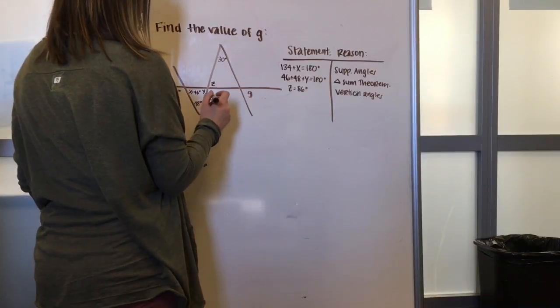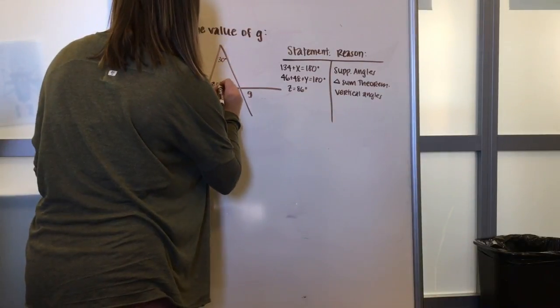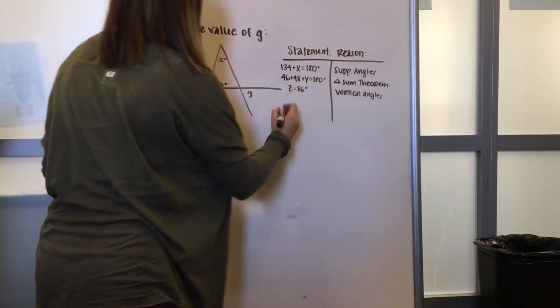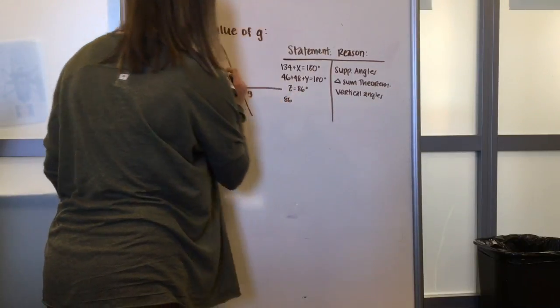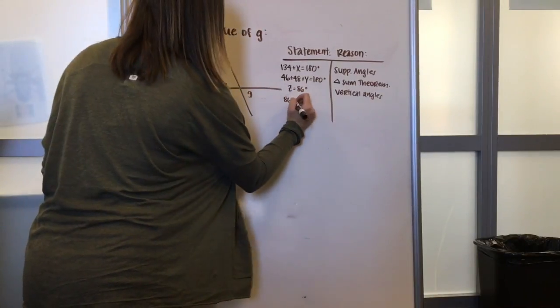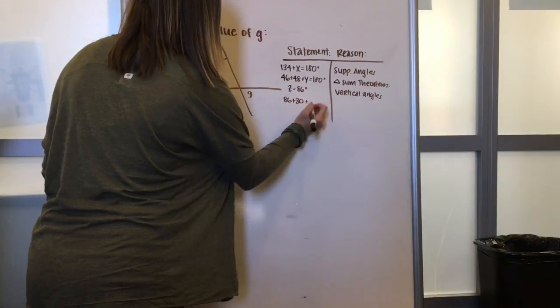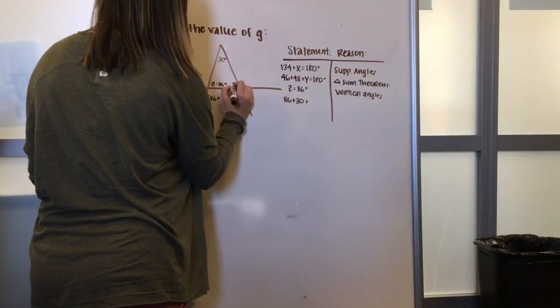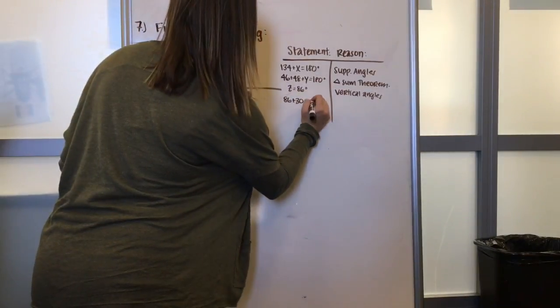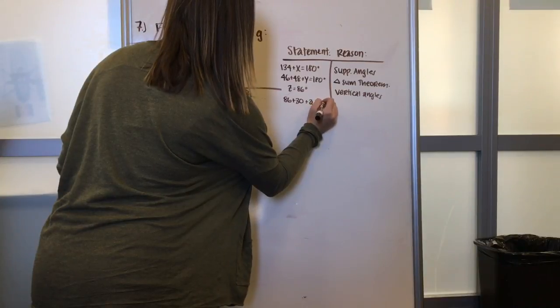And again, because of the triangle sum theorem, we know that z, which is 86 degrees, plus the 30 degrees we've been given, plus this angle here, a, is equal to 180 degrees.